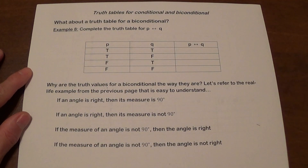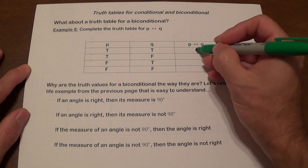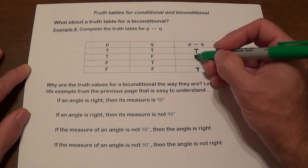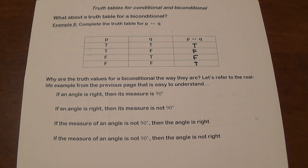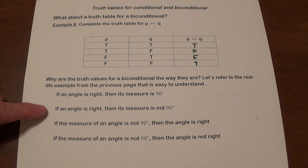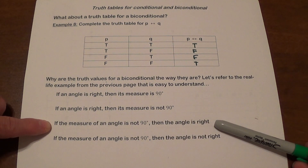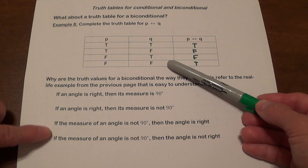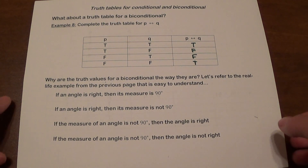The truth table for the biconditional is simple: if both are true, it's true; if both are false, it's true; the other two cases are false. Using the angle example: true-true (right angle, 90°) is true; true-false (right angle, not 90°) is false; false-true (not 90°, but right) is false; false-false (not 90°, not right) is true.